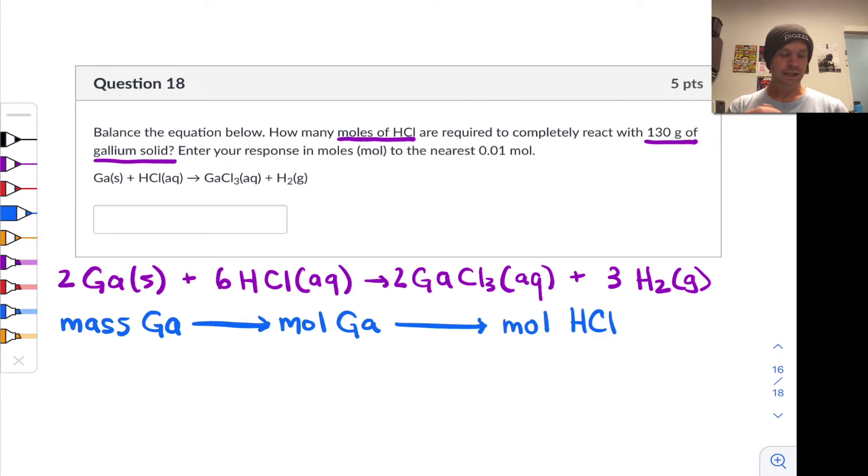So the first thing we're going to do here is multiply by the moles per gram of gallium. In other words, divide by the molar mass. Then to go from moles of gallium to moles of HCl, we're going to multiply by a stoichiometric factor. We can actually build this factor out from the given equation. For example, we can see that for every six HCls that react, two galliums react.